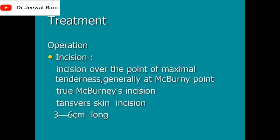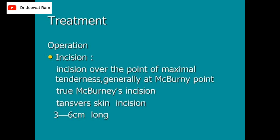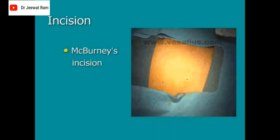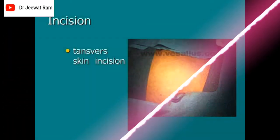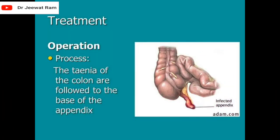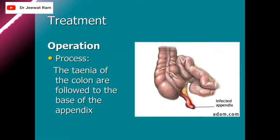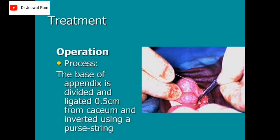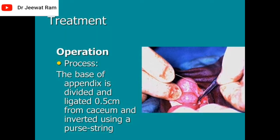Operation incision: incision over the point of maximal tenderness, generally at McBurney's point — McBurney's incision, a transverse skin incision 3 to 6 cm long. In this picture you can see McBurney's incision. Operation process: the taeniae of the colon are followed to the base of the appendix. The mesoappendix is divided between clamps and ligated. The base of the appendix is divided and ligated 0.5 cm from the cecum and inverted using a purse string.